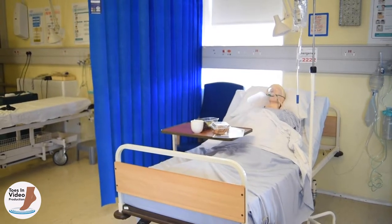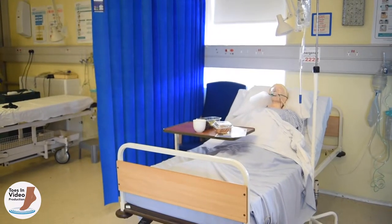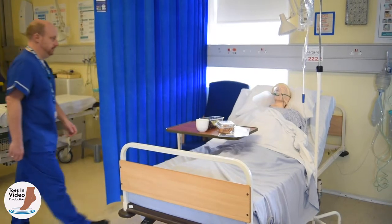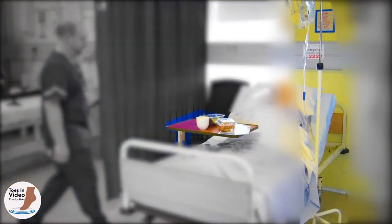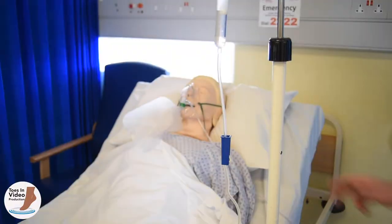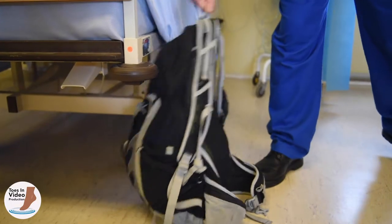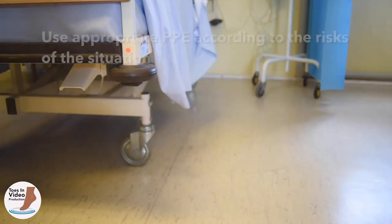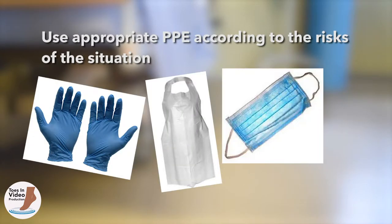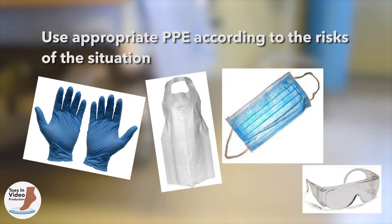When you discover the collapsed patient, you first need to ensure that the scene is safe to approach. Ensure that all hazards are removed for additional rescuers coming to assist you, and that all unnecessary equipment is removed as soon as reasonably possible. Assess the need for personal protective equipment such as gloves, aprons or splash masks according to the risks of each situation.